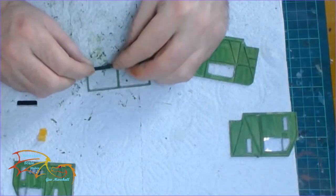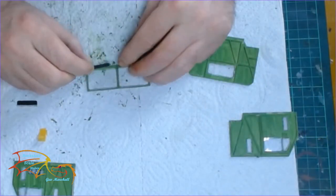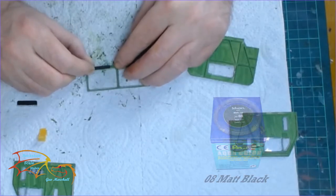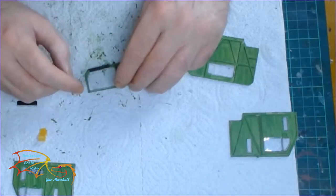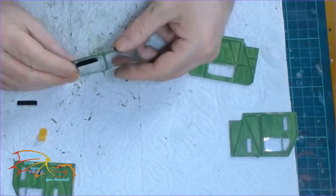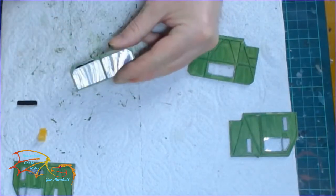It's back to the windscreen and placing in the sun visor. Now I painted the sun visor in Revell Aquacolor 08 matte black. I wasn't sure what color to paint them but I thought I'd just go with black. I think it makes quite a good contrast.